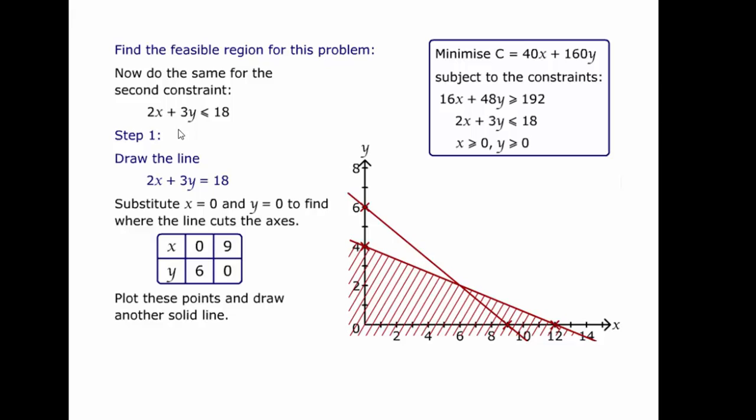Looking at the next constraint. Well, again, if we use the same approach, we've got 2x plus 3y is less than or equal to 18. x is zero, 3y is equal to 18. So y must be 6. When y is zero, 2x equals 18. So x must be 9. So we can draw the line like so.